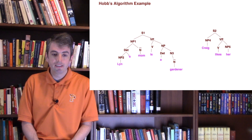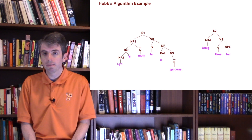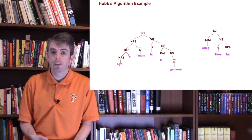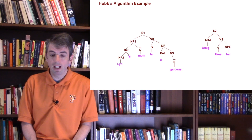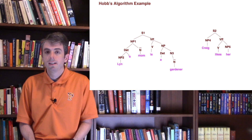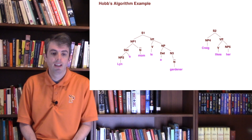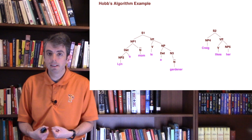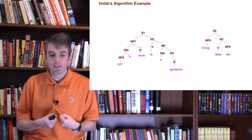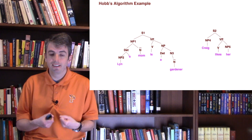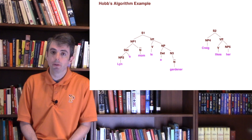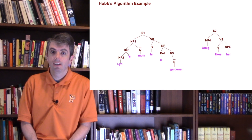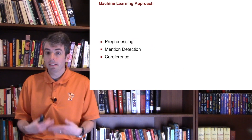For example, with the sentence 'Lynn's mom is a gardener, Craig likes her' — you want to solve the reference for 'her'. You go back: is there an entity in S2 that could match? Craig is a candidate but doesn't match in gender. So you go to the previous sentence S1, search left to right, and the first matching one is NP1, which corresponds to 'Lynn's mom'. You take that as your reference, because it matches in number and gender.